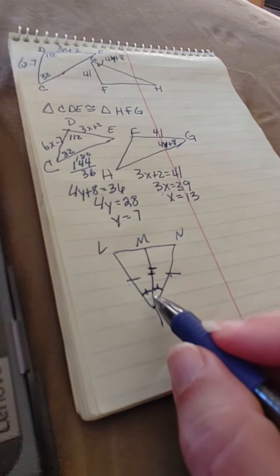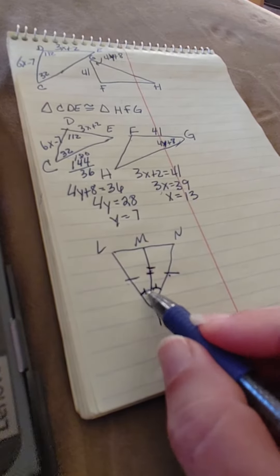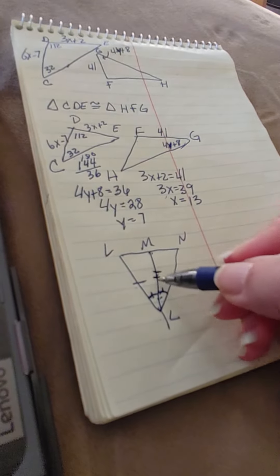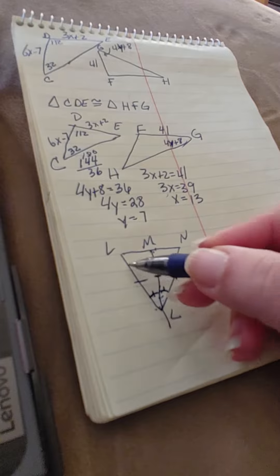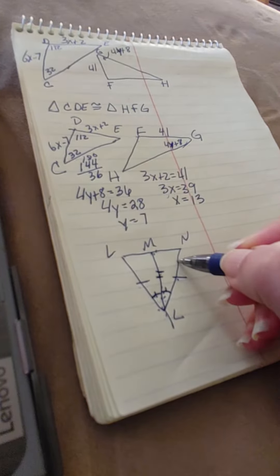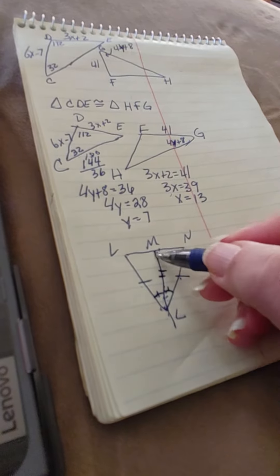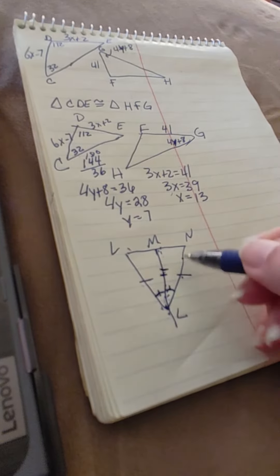So in order to say that these angles are the same, we would have to say that M bisects LKN. So we'd have to say MK bisects LKN.